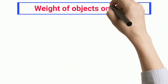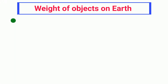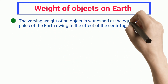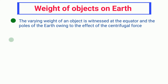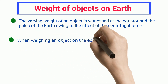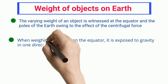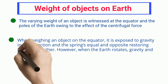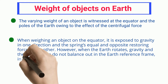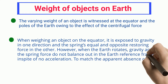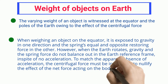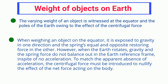The varying weight of an object is witnessed at the equator and the poles of the earth owing to the effect of centrifugal force. When weighing an object at the equator, it is exposed to gravity in one direction and the spring's equal and opposite restoring force in the other. However, when the earth rotates, gravity and the spring force do not balance out in the earth's reference frame, so the centrifugal force must be introduced to nullify the net force acting on the body.